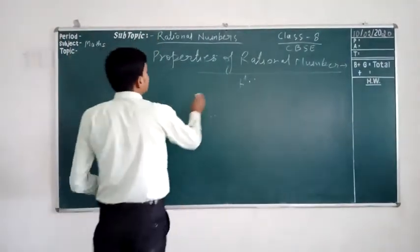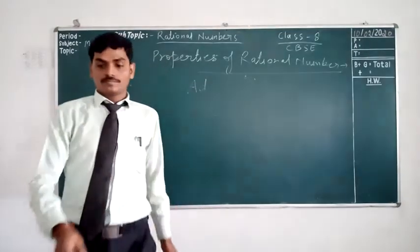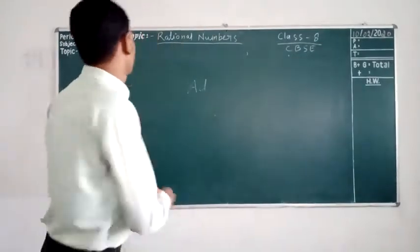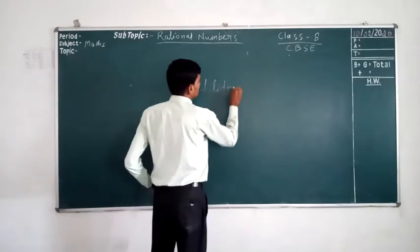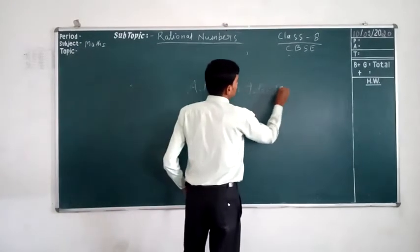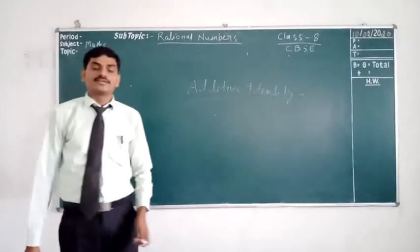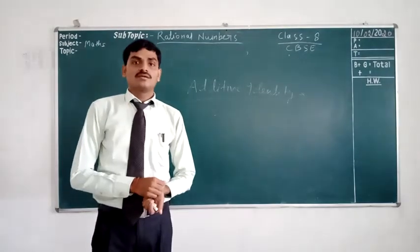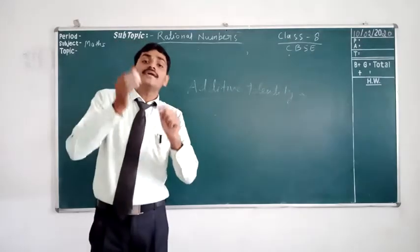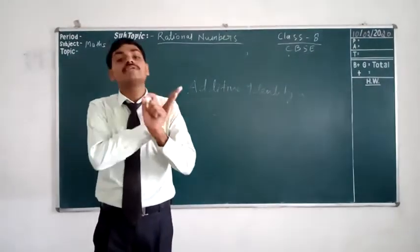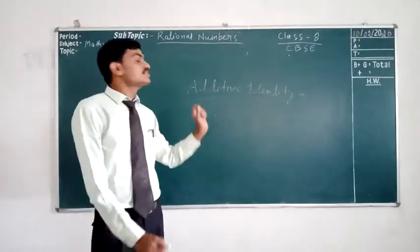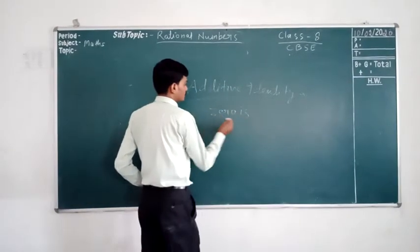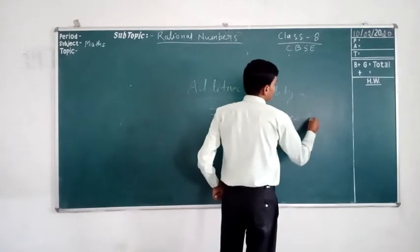Now, for the additive identity. What is the additive identity? If we add 0 to any number, then we get the same number. So we can say that 0 is the additive identity — after addition of 0 to any number, there will be no change in the number. So 0 is called the additive identity.